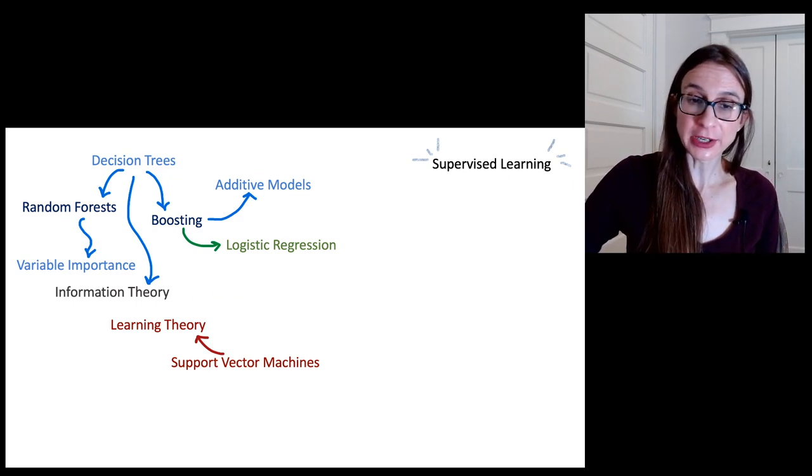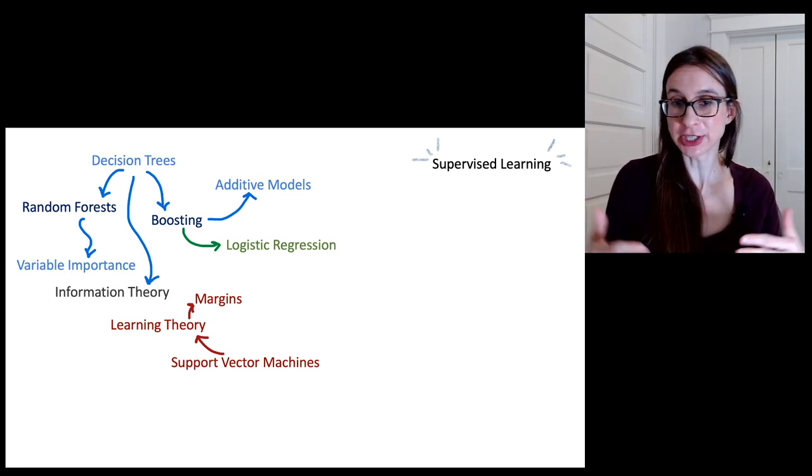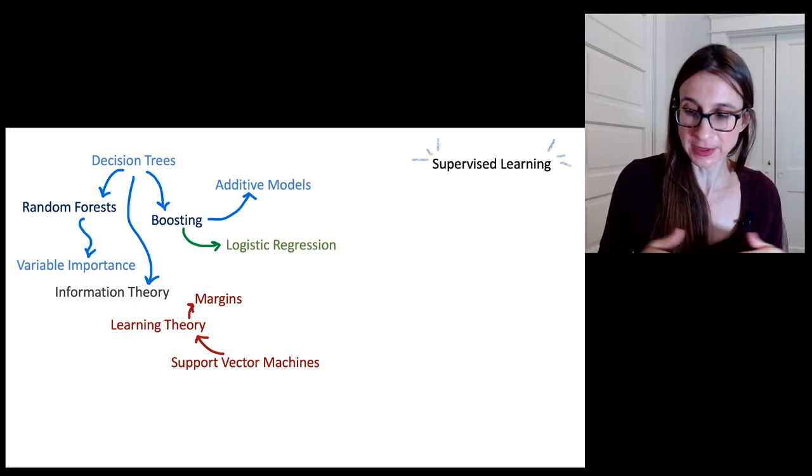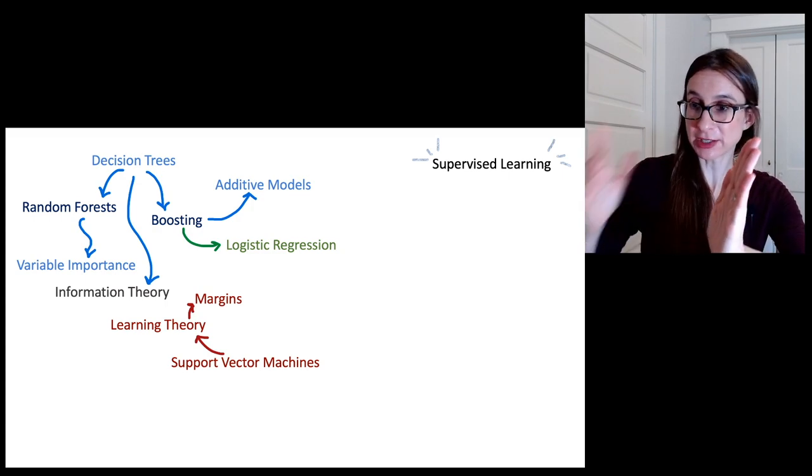Okay, and then from learning theory, we go to margins, because learning theory tells us that we should maximize margins, which is exactly what support vector machines is designed to do. And the margin is the distance between the decision boundary and the nearest data point.